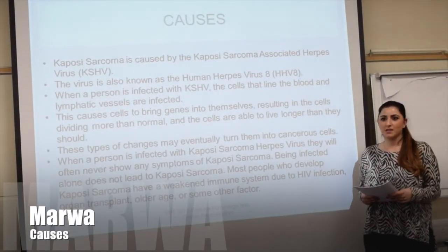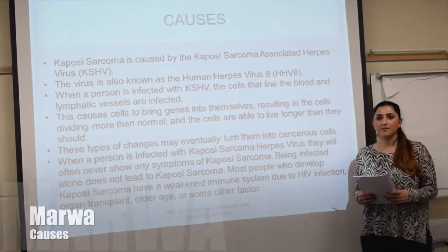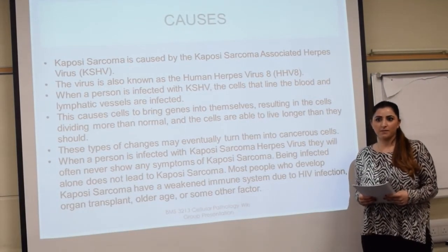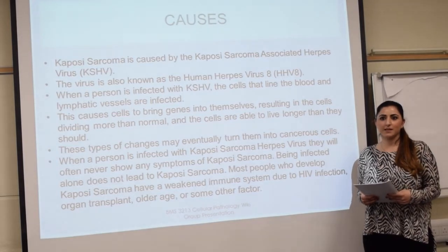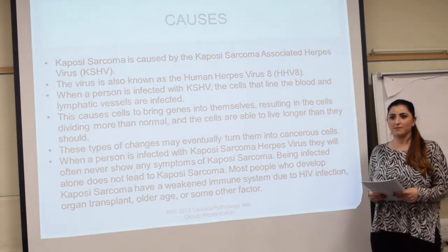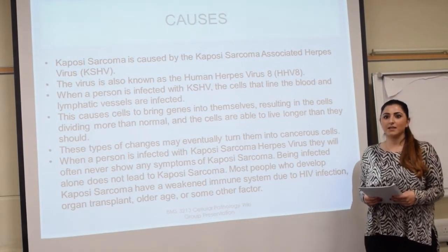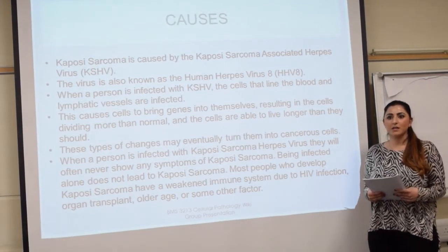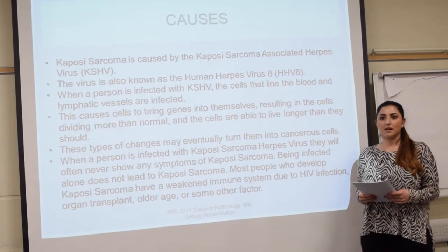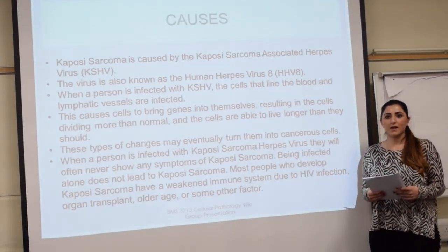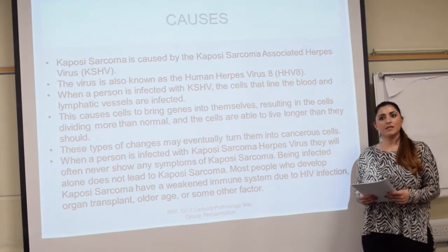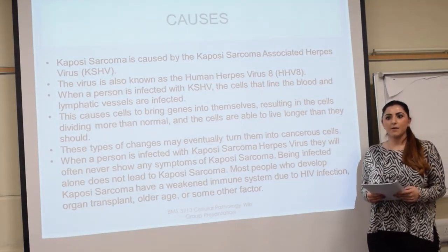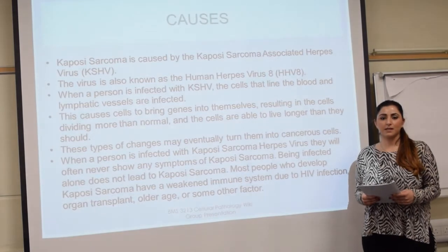HHV8 is also known as human herpesvirus type 8. When a person is infected with Kaposi's sarcoma herpesvirus, the cells that line the blood and lymphatic vessels become infected. This causes the cells to bring genes into themselves, resulting in the cells dividing more than normal and living longer than they should. These types of changes may eventually turn into cancerous cells.